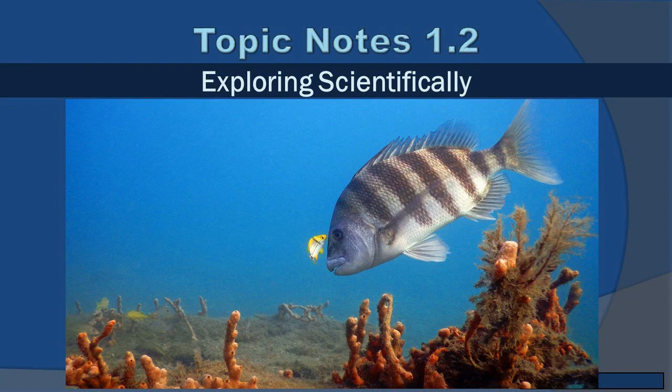Today, we're going to focus on some of the major principles of science and what science really is. In doing so, I want to start by asking you a question. In this picture, you see two fish. The larger fish is a sheep's head, and the smaller fish near its head is called a pork fish, a juvenile pork fish.